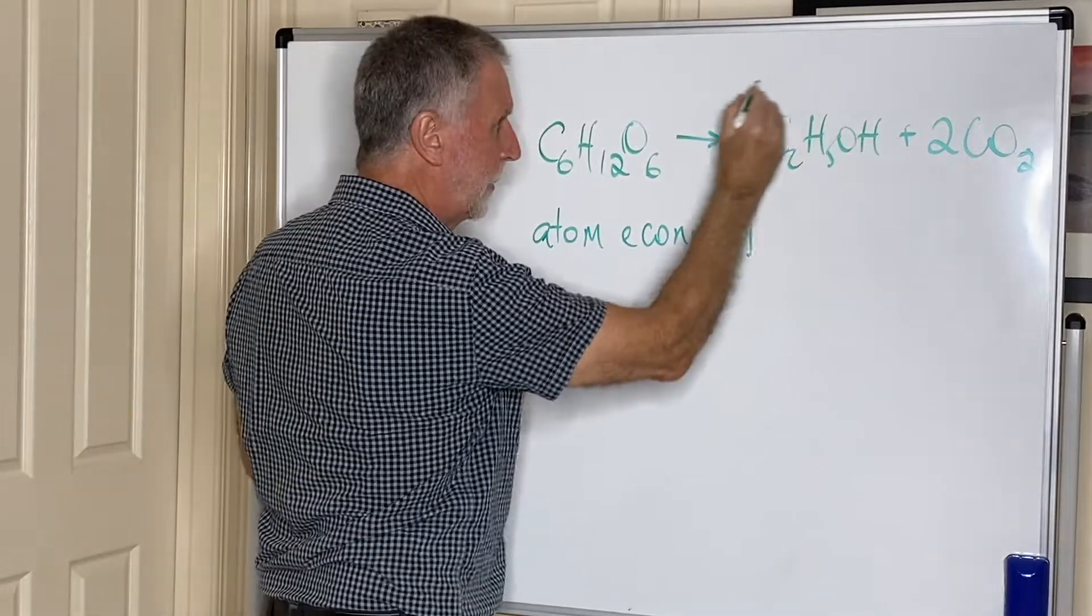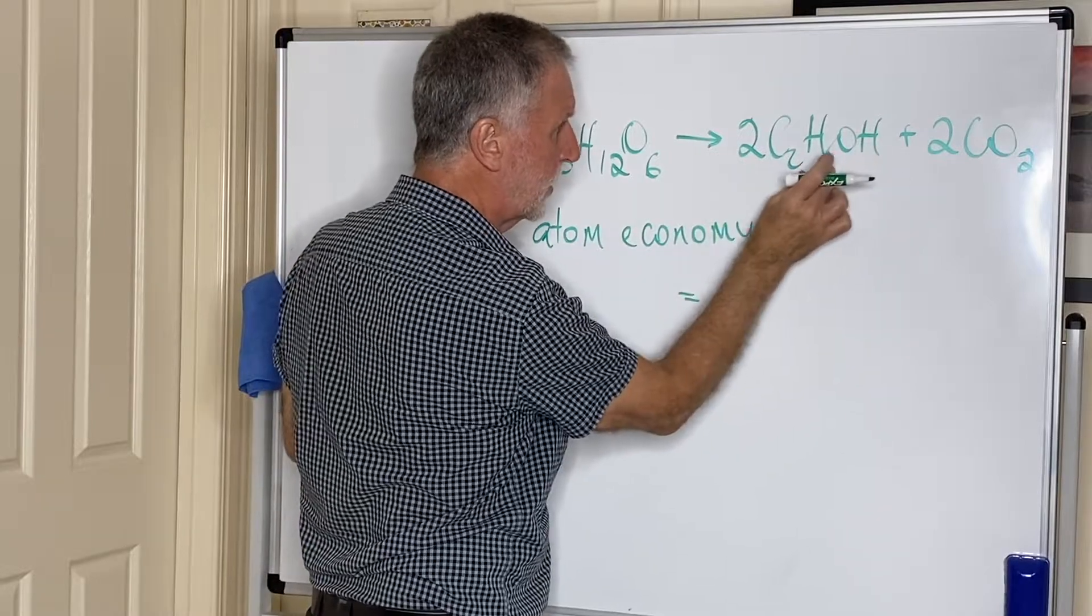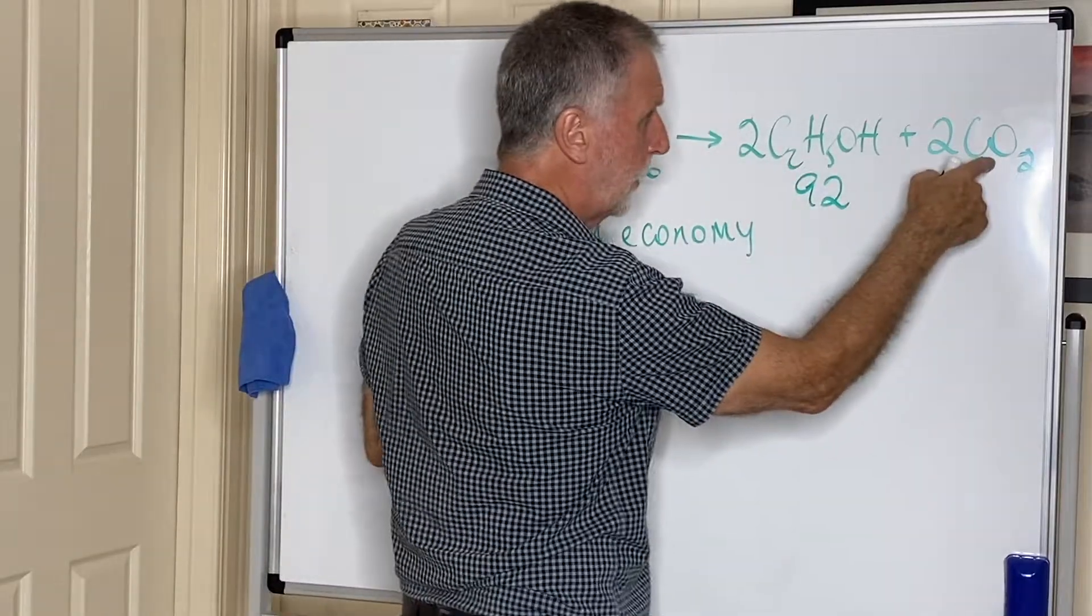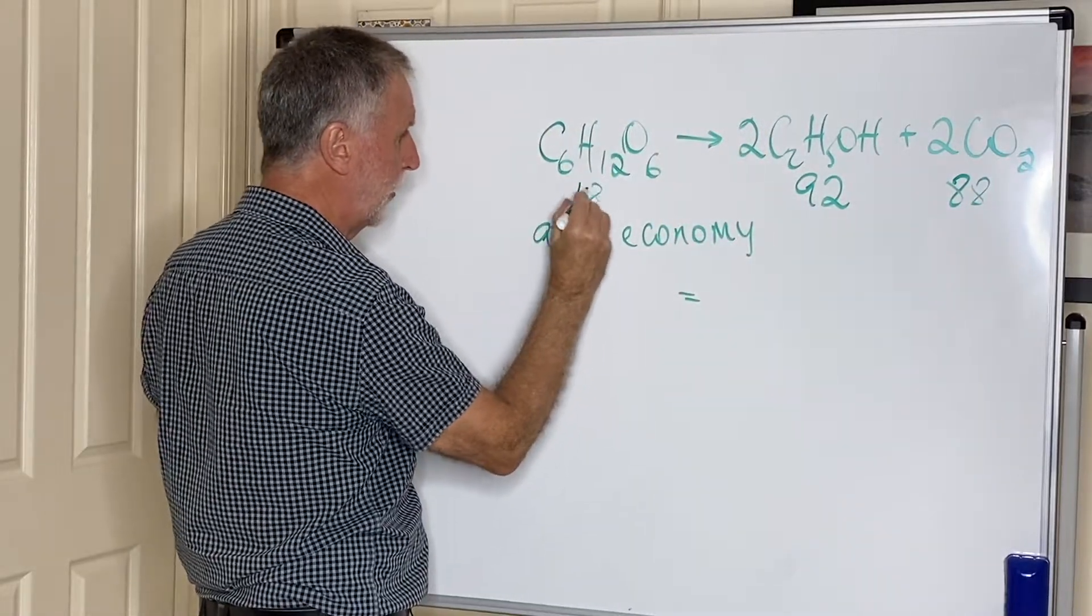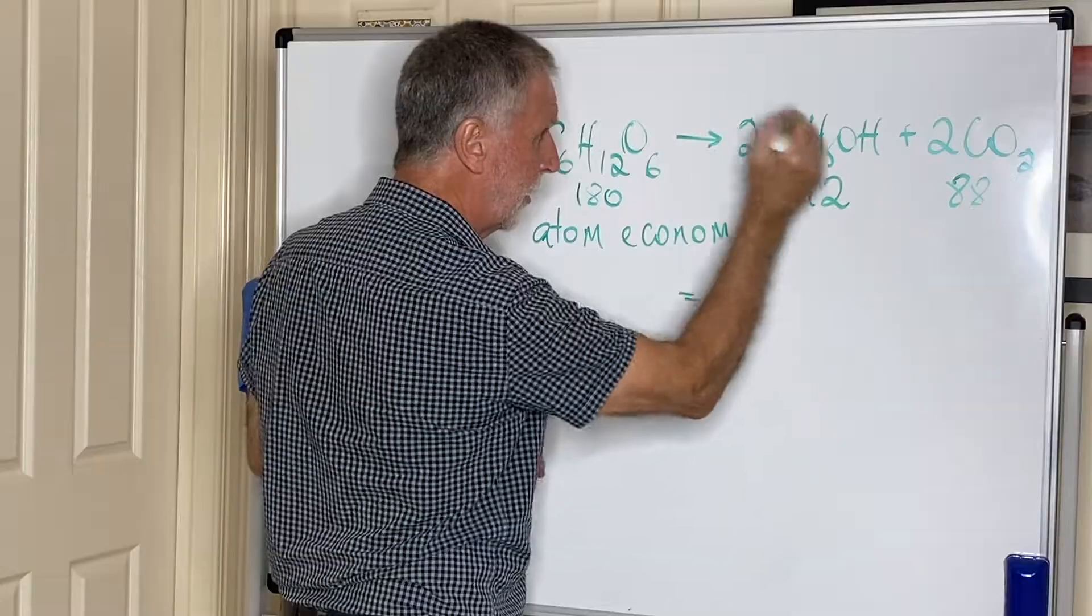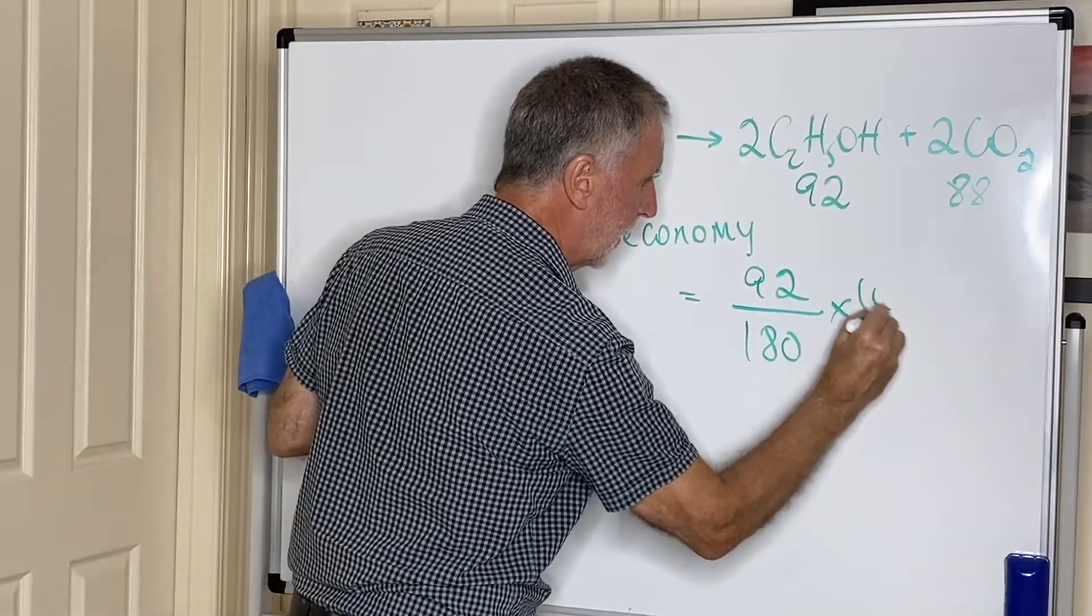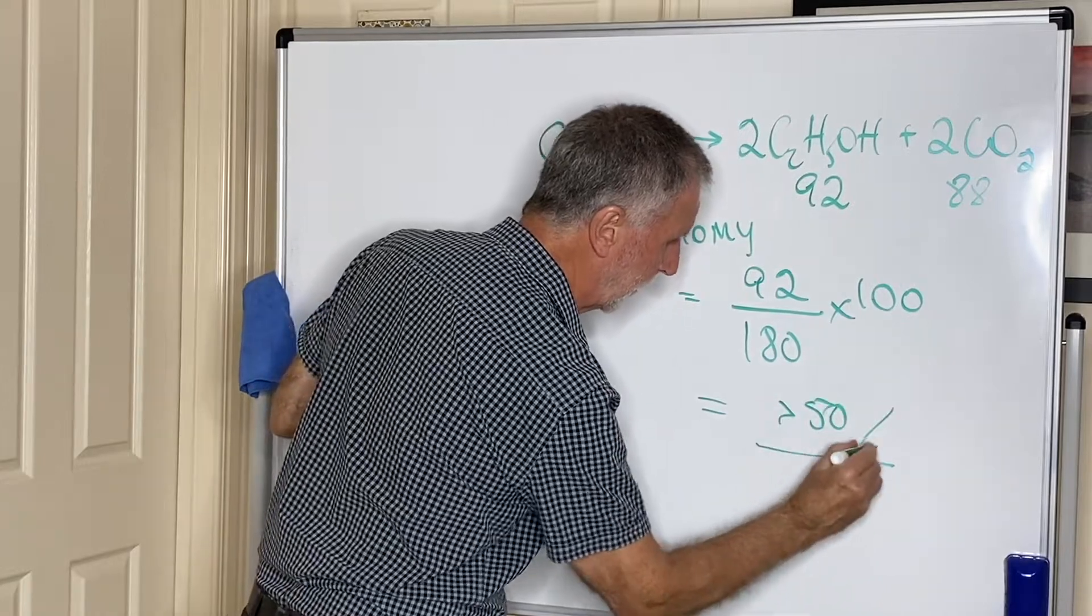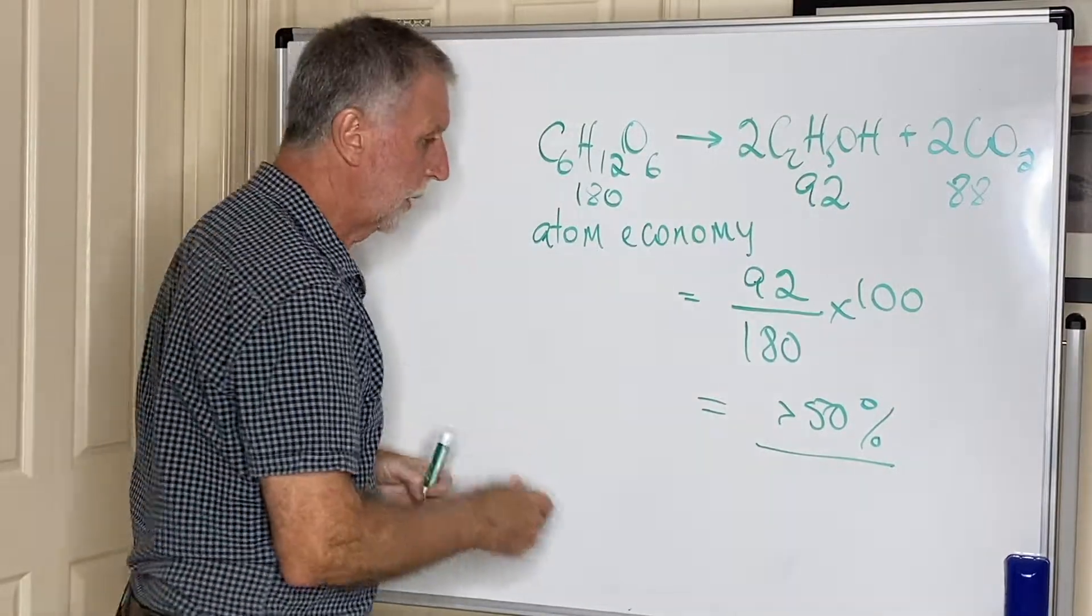So if I was working out the atom economy of this reaction, I would simply add up the total value there. What have we got? Carbon: 24 and 6, so that would be 30, and 16, 46, so that would be 92. Carbon dioxide is 44, so 2 times that is 88. And if you add those two together, this would be 180. So the atom economy of this reaction, bearing in mind this is your desired product, would be 92 over 180 times 100, and that would give you the percentage, which is just over 50 percent—not the best atom economy in the world.